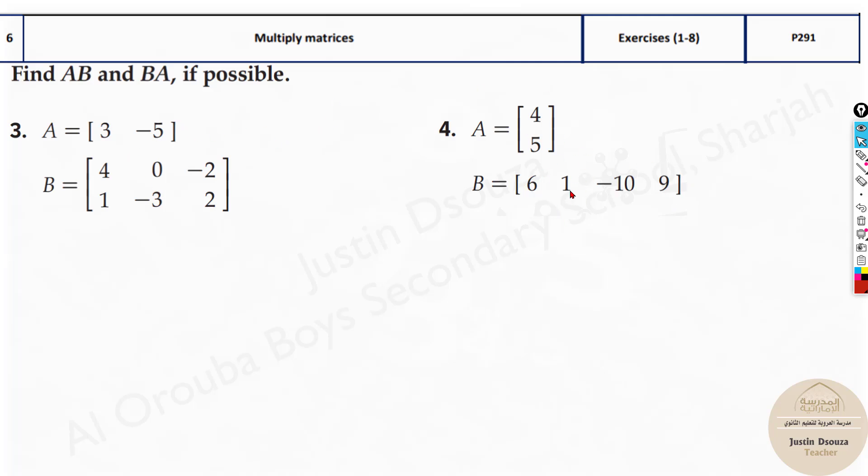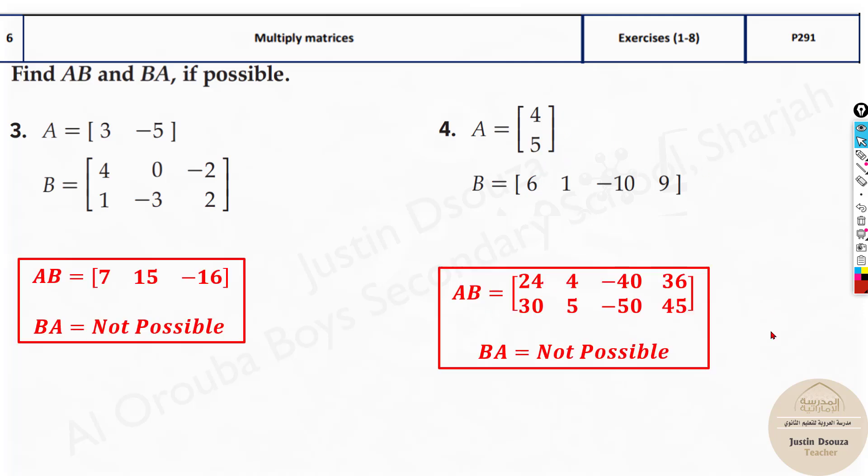Generally you're supposed to have only 2 cross 2 or 3 cross 3 matrix. But over here there is one 4 cross. This is one row four columns. Try this by the method we just now saw.